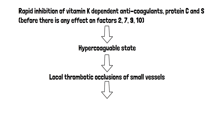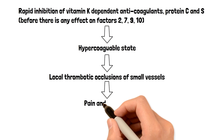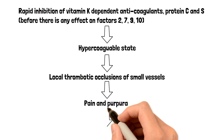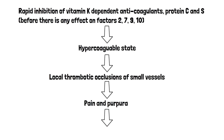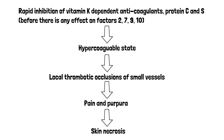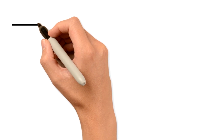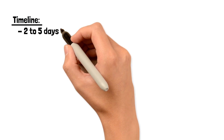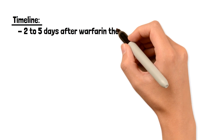These tiny thromboses in your small vessels are going to cause pain and purpura. In some individuals this builds up and eventually causes skin necrosis — though this doesn't happen to all people. In terms of the timeline, this complication usually occurs 2 to 5 days after warfarin therapy is initiated.